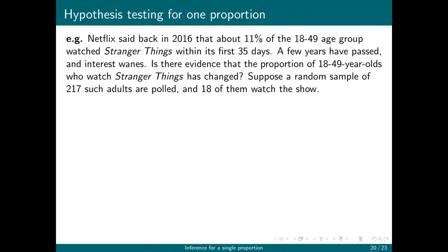Let's have one more example of a hypothesis test for a single proportion. Netflix said back in 2016 that about 11% of the 18-49 year old age group watched Stranger Things within its first 35 days of being available. Is there evidence that in the intervening years the proportion of 18-49 year olds who watch the show has changed? Suppose that a random sample of 217 adults in that group are polled and 18 of them watch the show. Our sample proportion is 18 over 217, which is equal to 0.0829.